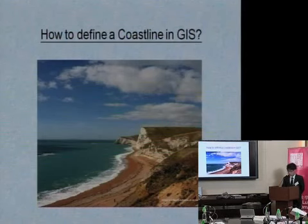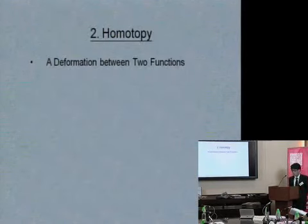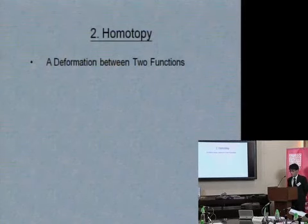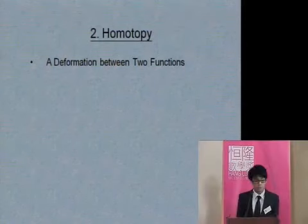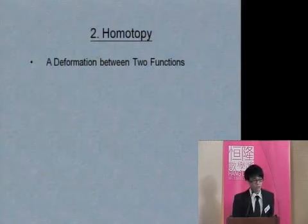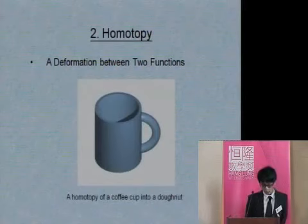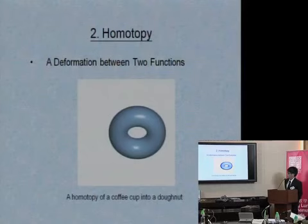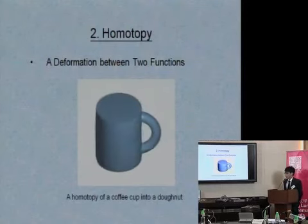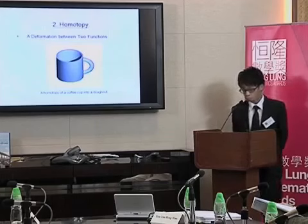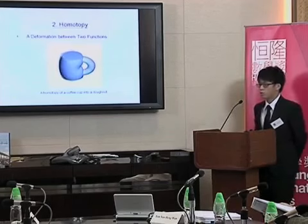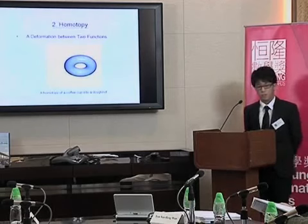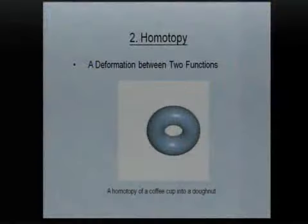The fuzzy set is a tool to deal with membership uncertainty. Now, homotopy deals with objects continuously changing over time. It is a deformation between two curves, two functions. One famous example is the homotopy of a coffee cup into a donut. This homotopy can help us understand the process of changing and the relations between these two objects. However, these are two very different concepts — fuzzy and homotopy — so how can we combine them to produce a meaningful tool?